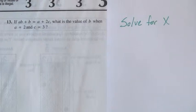Question 13 reads, if AB plus B is equal to A plus 2C, what is the value of B when A equals 2 and C equals 3?